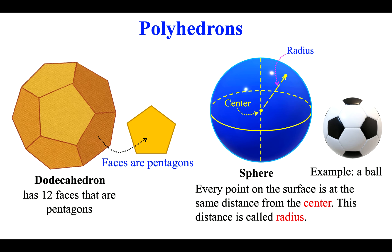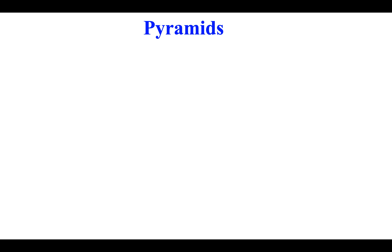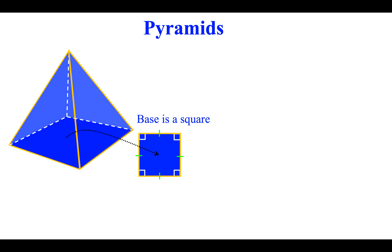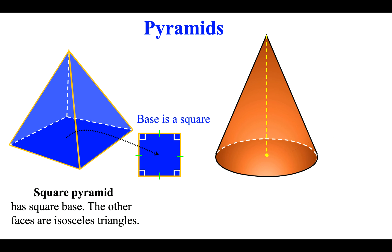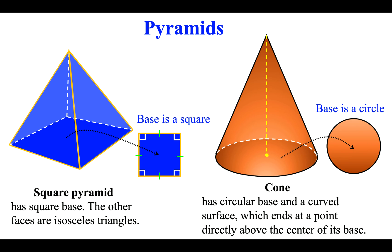Pyramids: Square pyramid has square base. The other faces are isosceles triangles. Cone has circular base and a curved surface which ends at a point directly above the center of its base.